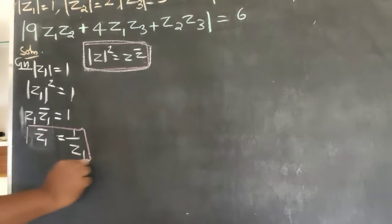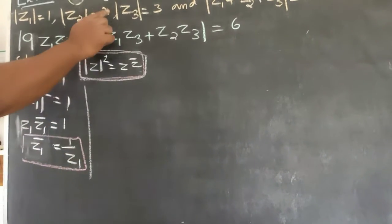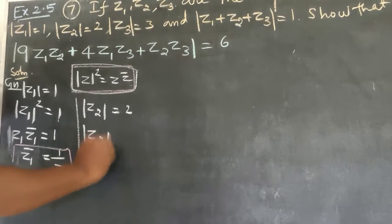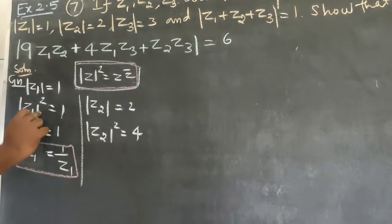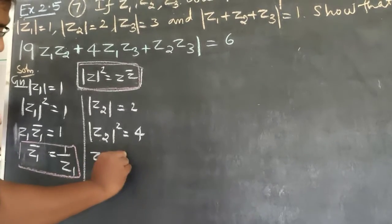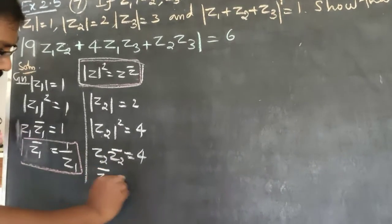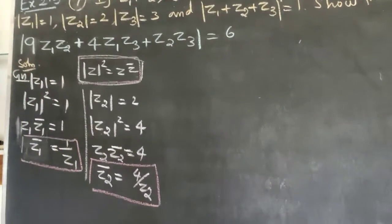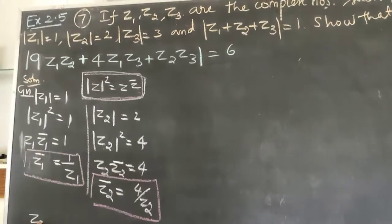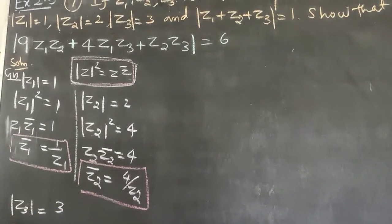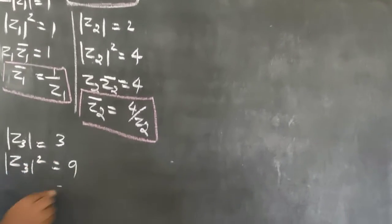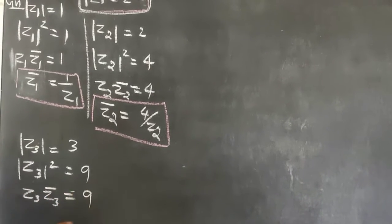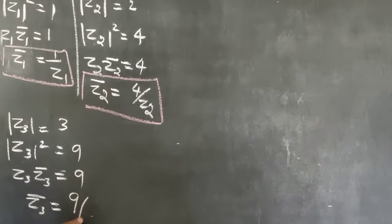Modulus of Z2 equals 2. Applying the formula, squaring both sides: Z2 times Z2 bar equals 4, so Z2 bar equals 4 by Z2. Similarly, modulus of Z3 equals 3. Squaring: Z3 times Z3 bar equals 9, so Z3 bar equals 9 by Z3.